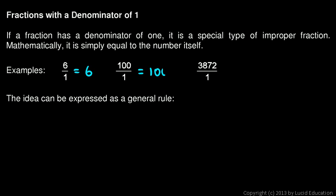100 over 1 is equal to 100. 3,872 over 1 is equal to 3,872. So any number over 1 is simply equal to that number.